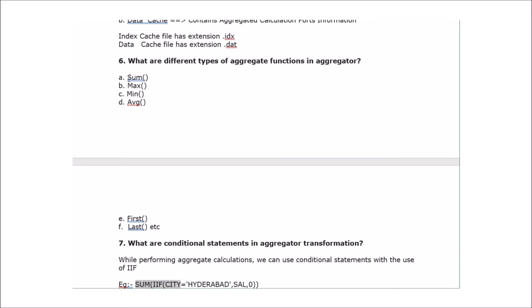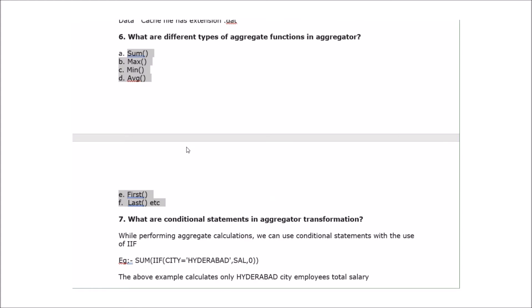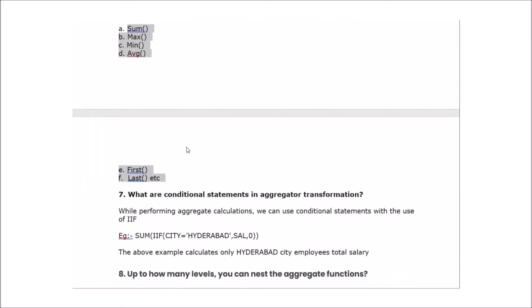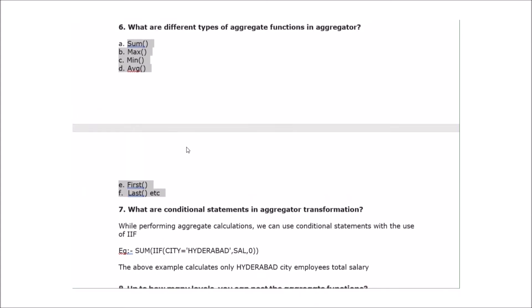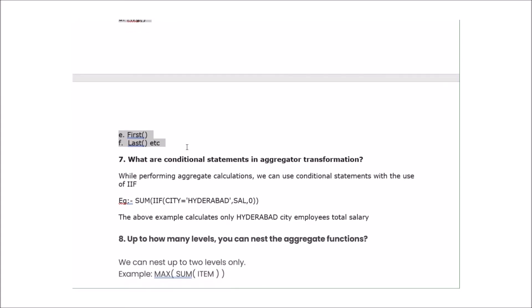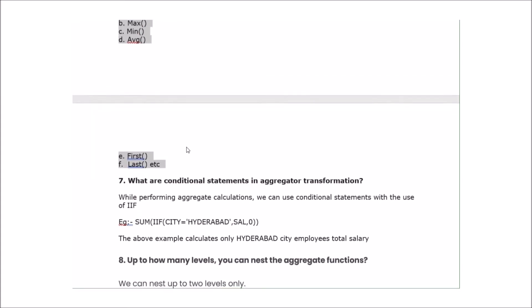The next question: what are the different types of aggregate functions in aggregator? We use aggregate functions such as SUM, MAX, MIN, AVG (average), FIRST, and LAST. These are the basic functions normally used in aggregator transformation.